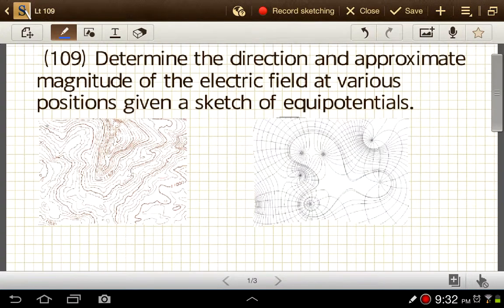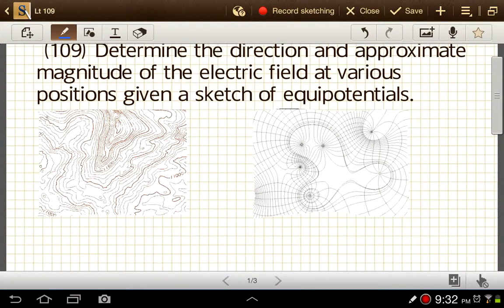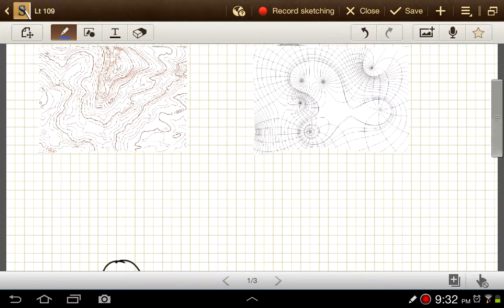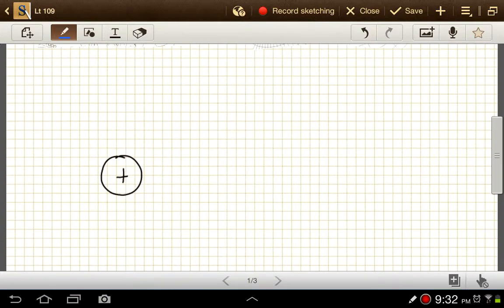So we need to get a little practice with sketching these and also with interpreting these. One type of problem that you can expect to see on the AP test is to be given a graph just of the equipotential lines and asked to either calculate or to sketch the electric field lines that would go along with that. So let's look at just some simple cases first to give us an idea of what these things look. So first we'll draw the electric field on each of these, and then we'll put in the equipotential lines.